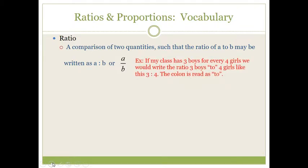For example, if my class has three boys for every four girls, we would write the ratio three boys to four girls like this: three colon four. Remember, the colon is read as the word "to," so I read that ratio as three to four.